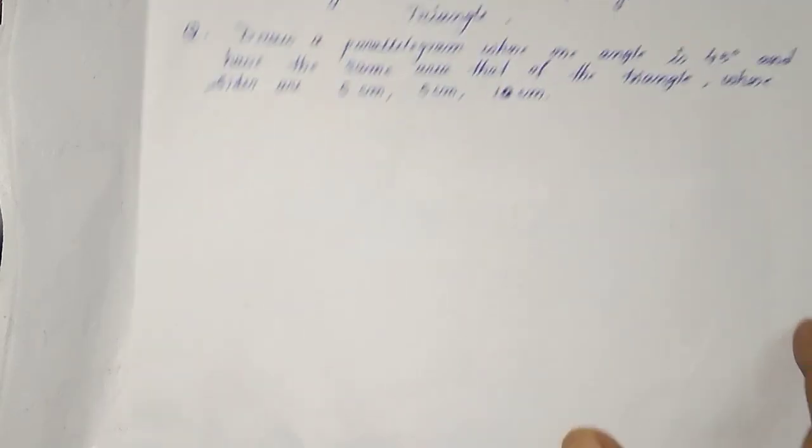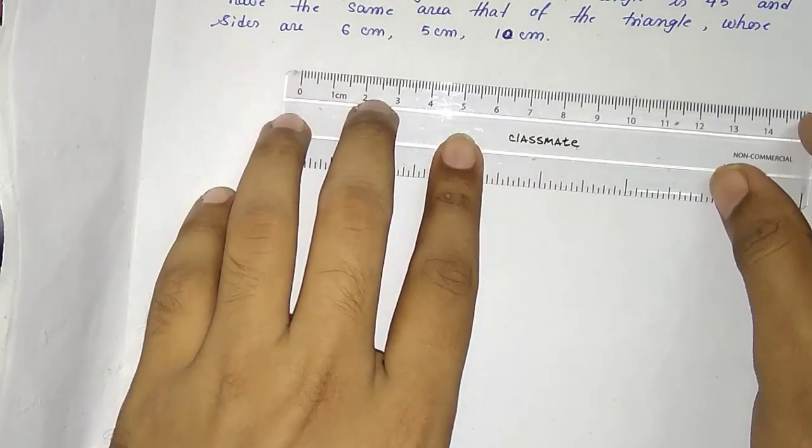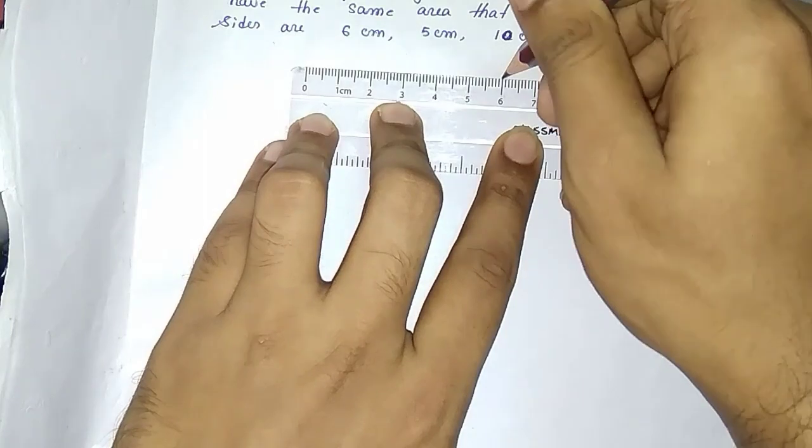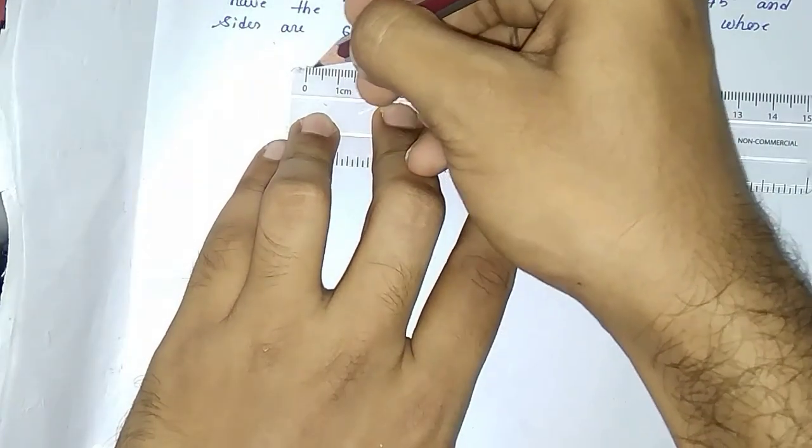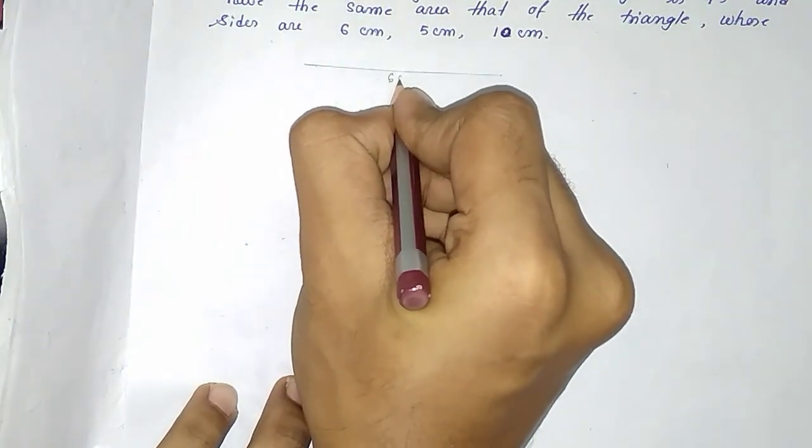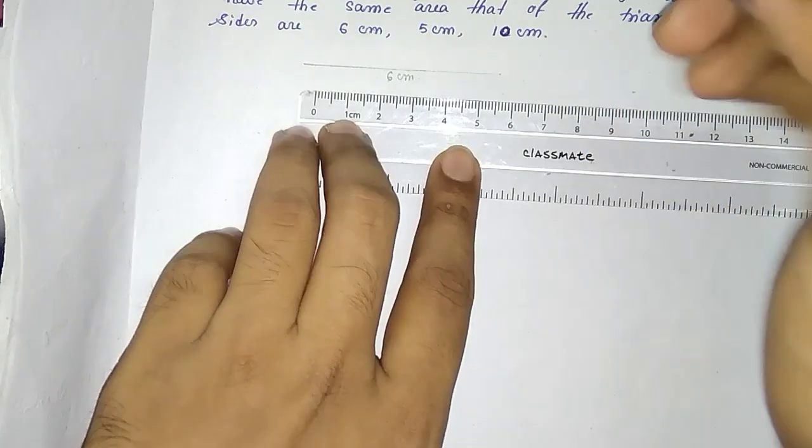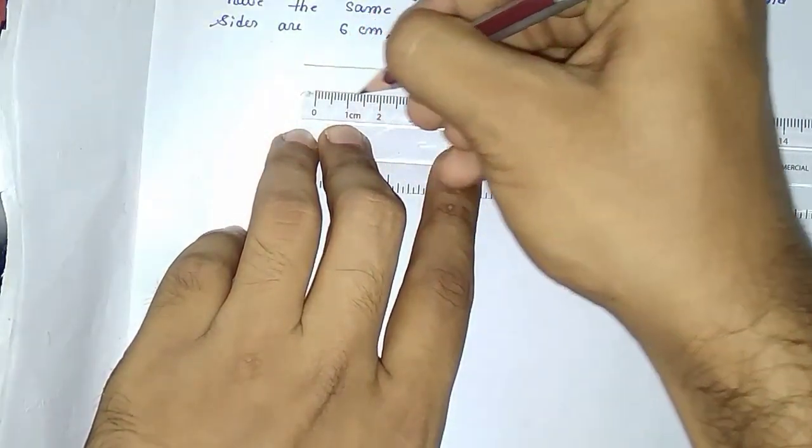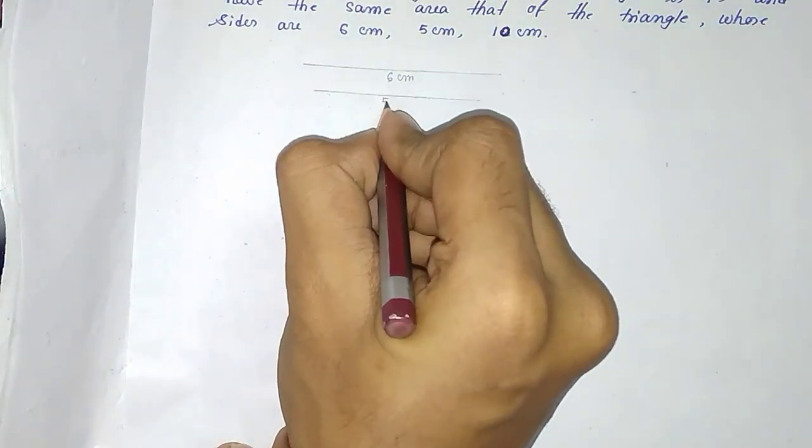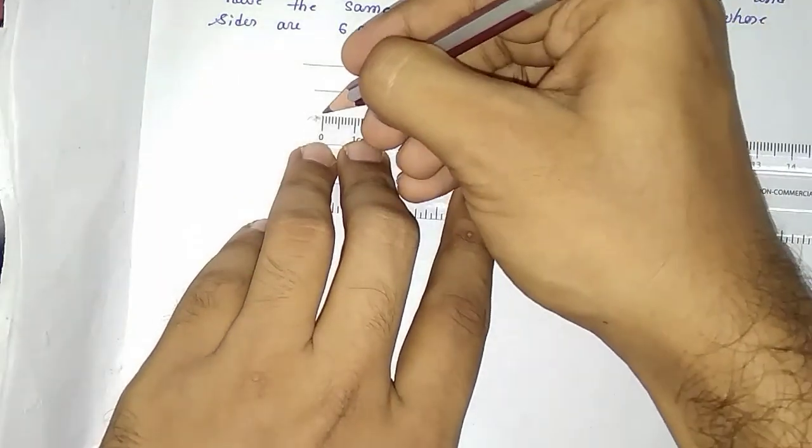Before drawing the complete figure, I will first draw the three given sides. First, I am drawing 6 centimeters, you can see it here. Then 5 centimeters, and lastly I am drawing 10 centimeters.